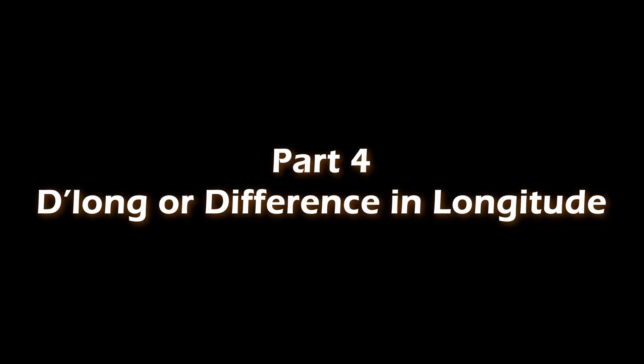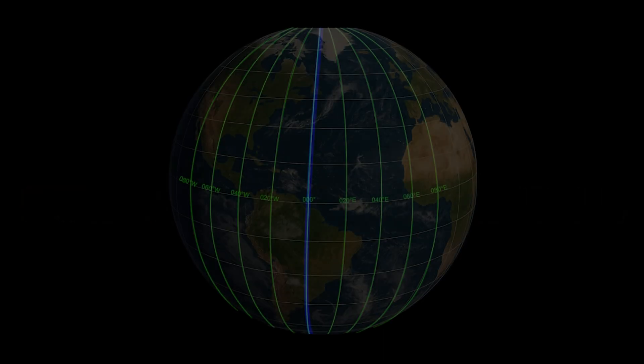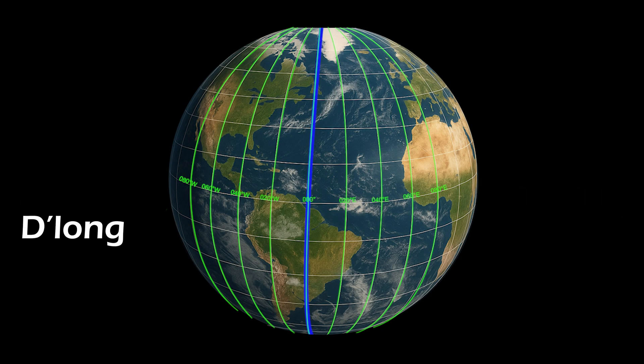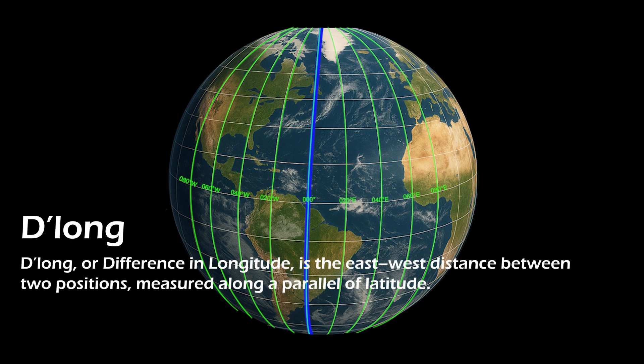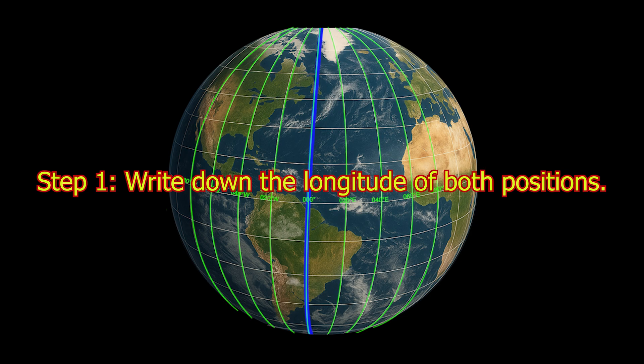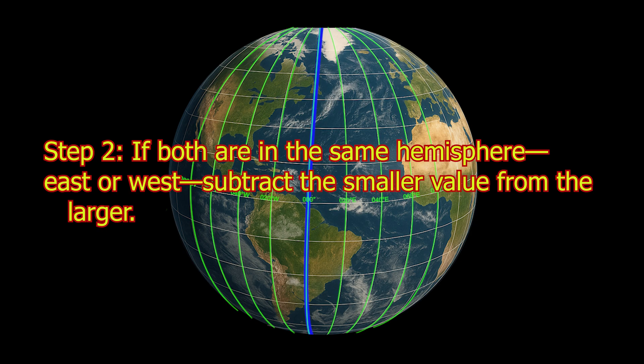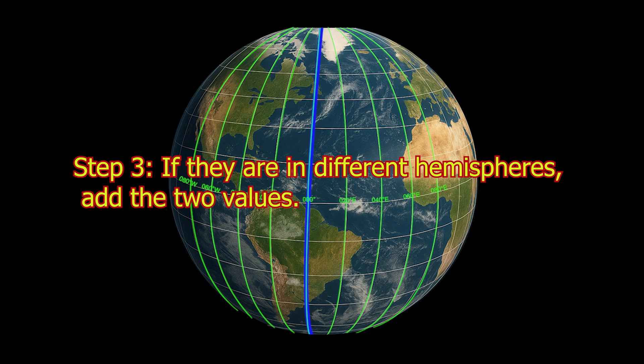Now let's talk about D-long. D-long, or difference in longitude, is the east-west distance between two positions, measured along a parallel of latitude. Here are the steps to find it: 1. Write down the longitude of both positions. 2. If both are in the same hemisphere, east or west, subtract the smaller value from the larger. 3. If they are in different hemispheres, add the two values.